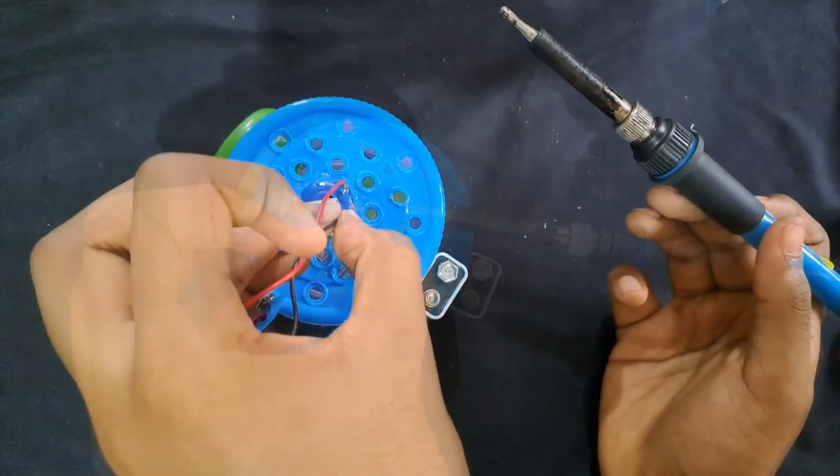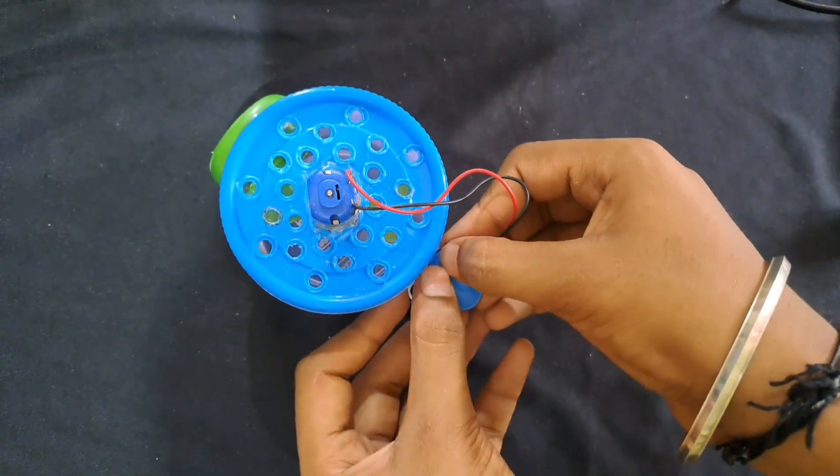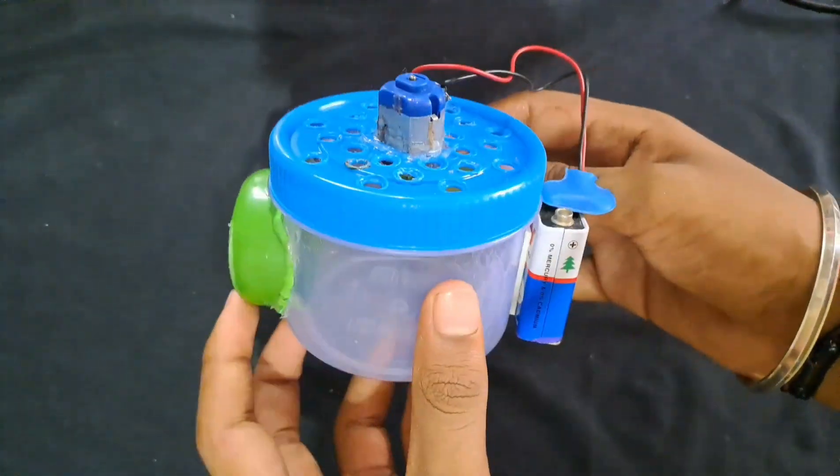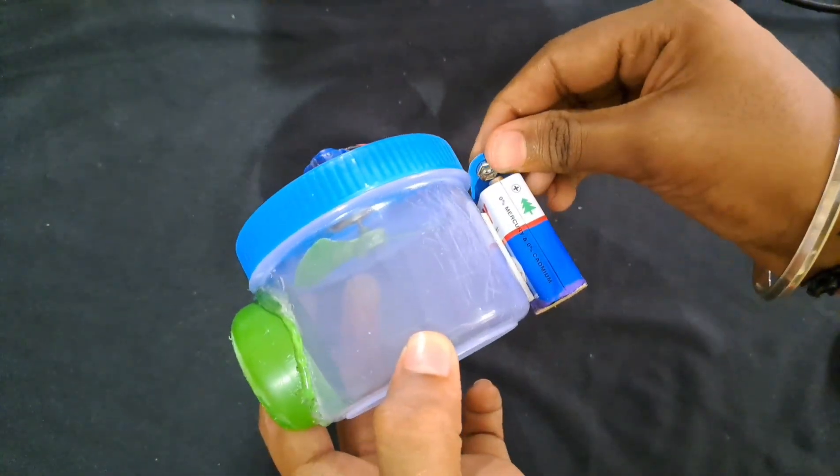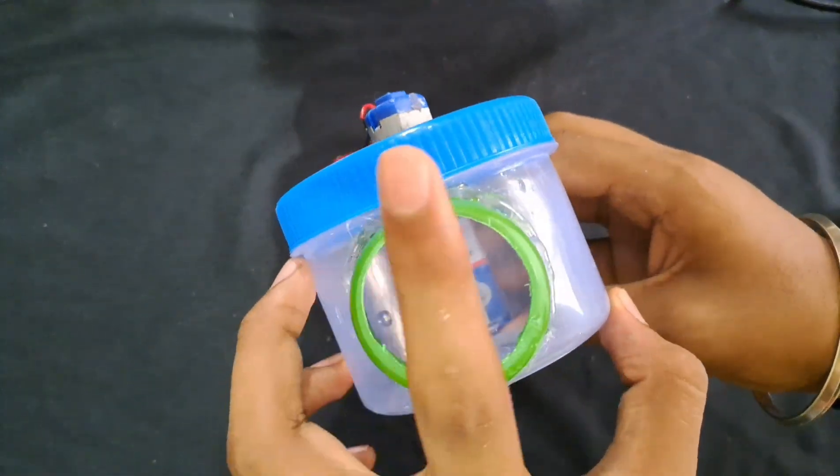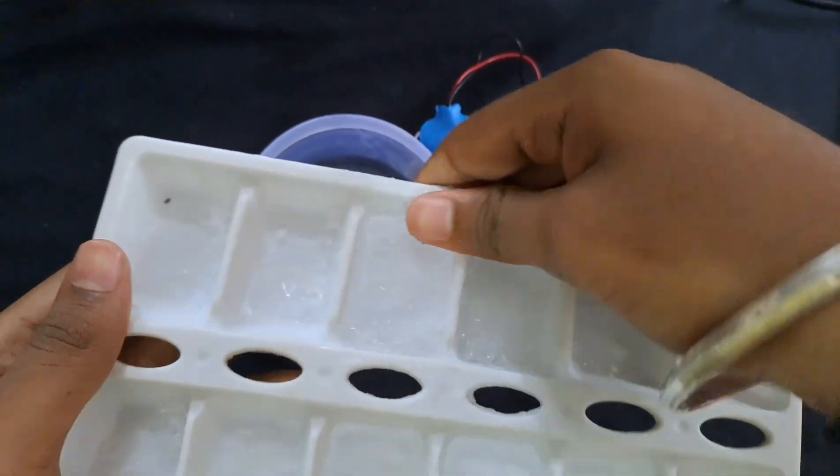Now we have to use the 9V battery connector. Now we solder it so we can save that power. Now we are connecting the motor. Here we will add a switch. Now we have sprinklers. We already use ice cubes.